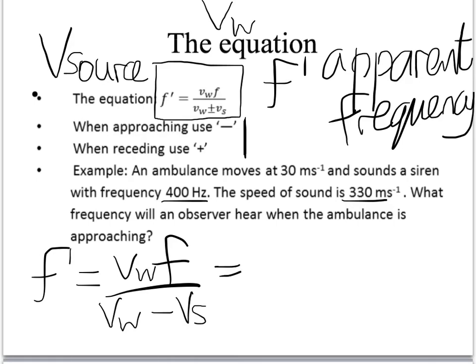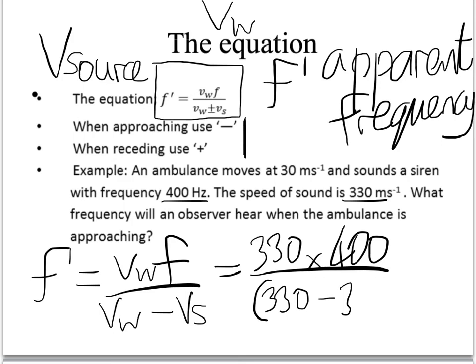You would have 330, which is the speed of sound, the wave speed in this case, times the 400 hertz on the top line. And you'd be dividing that by the 330 minus the speed of the ambulance, which is 30 metres per second in this case. So it would be over 300. So just punching that in the calculator, I get 440. I can't quite squeeze the unit in there. We'll just put it here. Hertz. Notice that's a higher frequency than the 400. And we expect that because, in this case, the ambulance is approaching us.